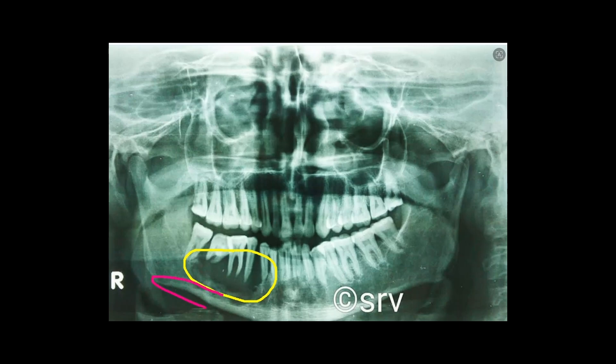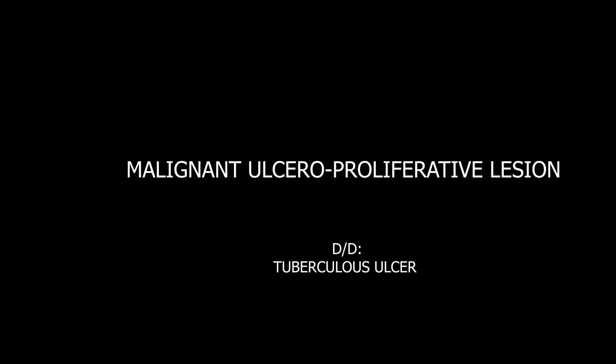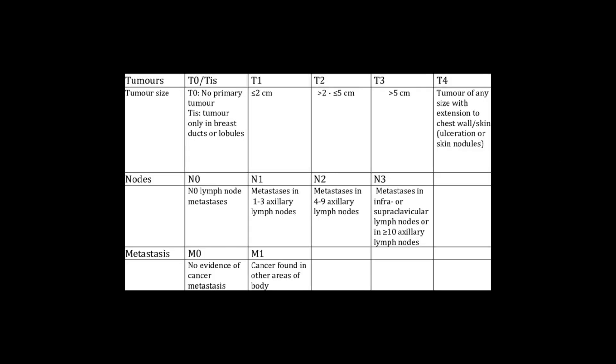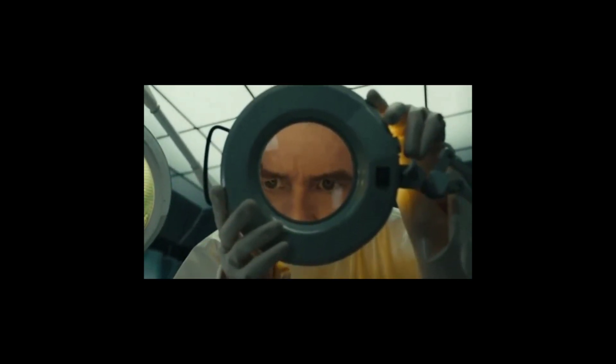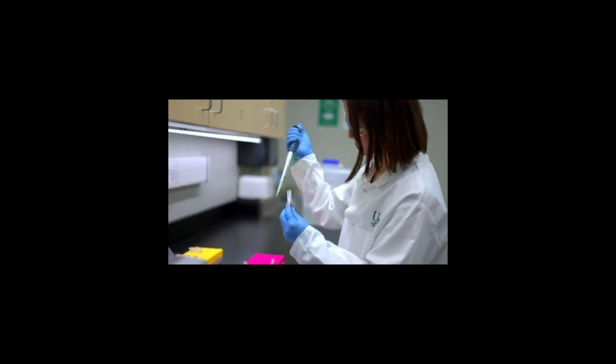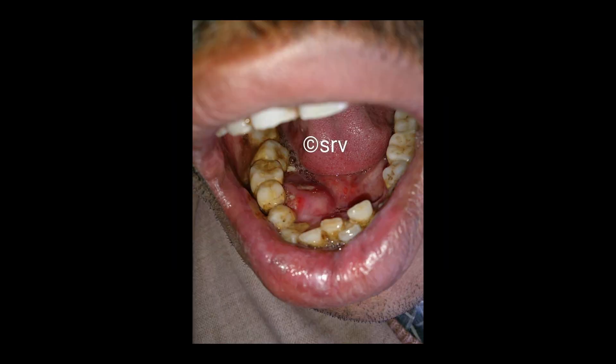Correlating the clinical features and radiographic findings, a provisional diagnosis of malignant ulceroproliferative lesion was given, with a differential diagnosis of tuberculosis ulcer. The staging was given as T1, N1, and M0. An incisional biopsy was planned for this patient and the specimen was sent to the lab for further investigations.